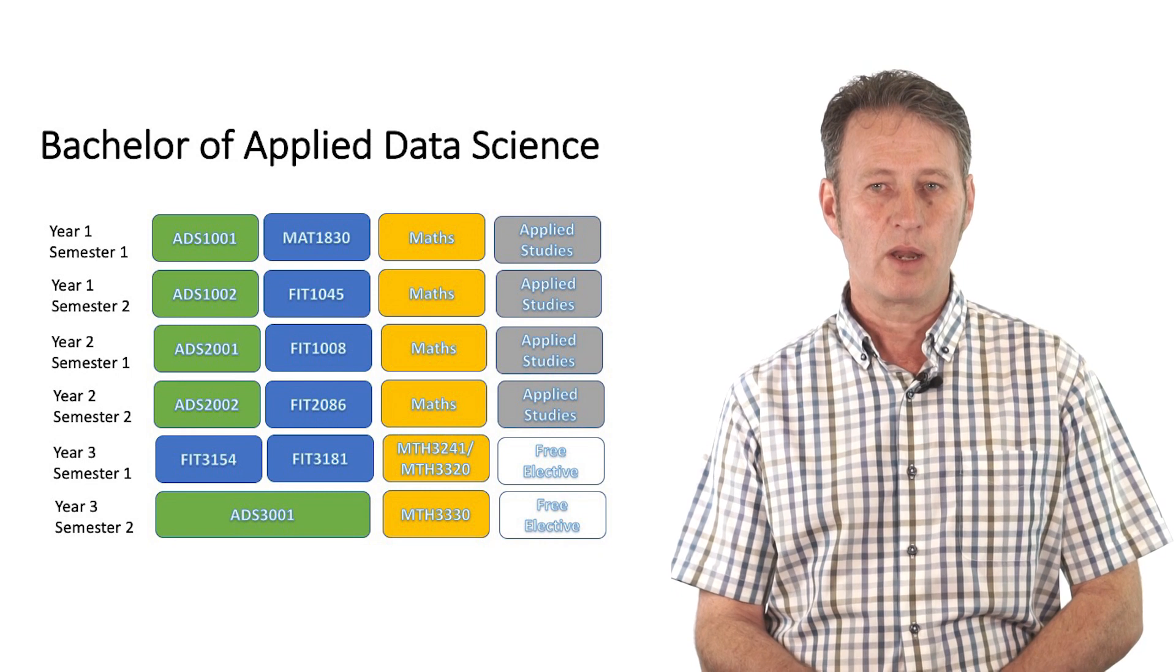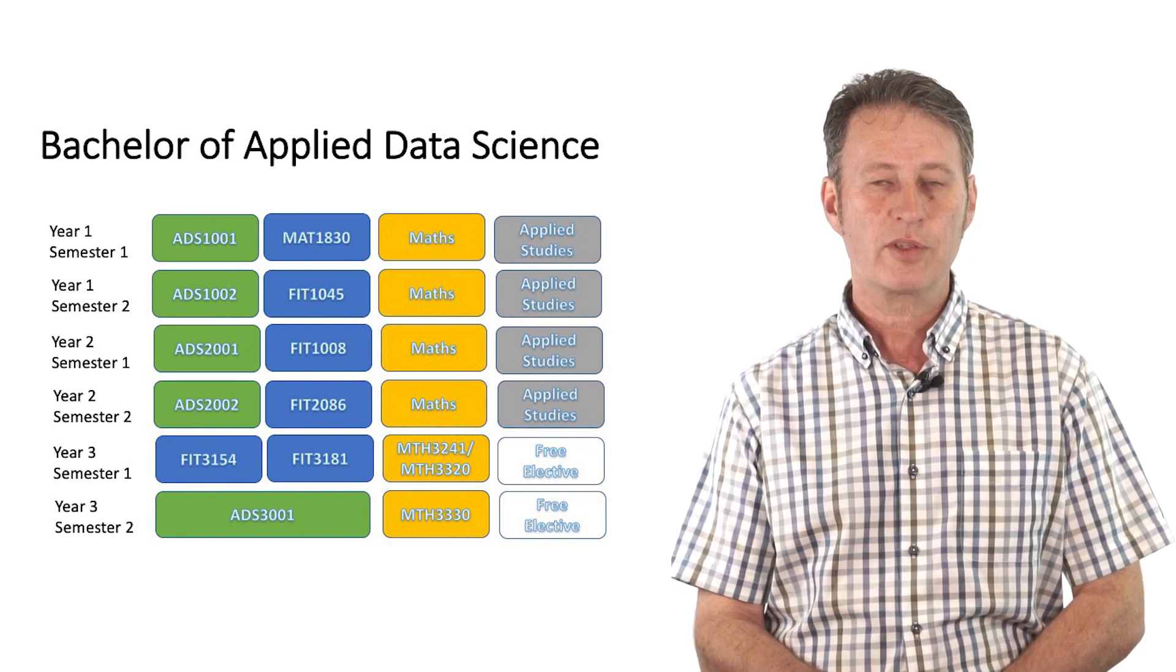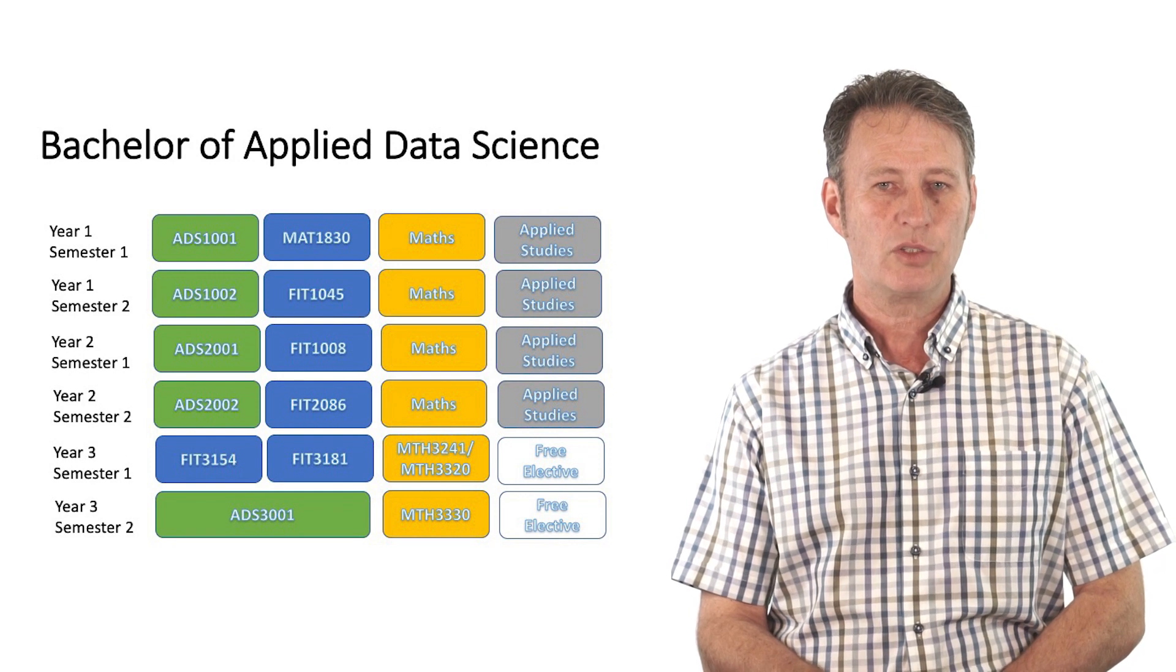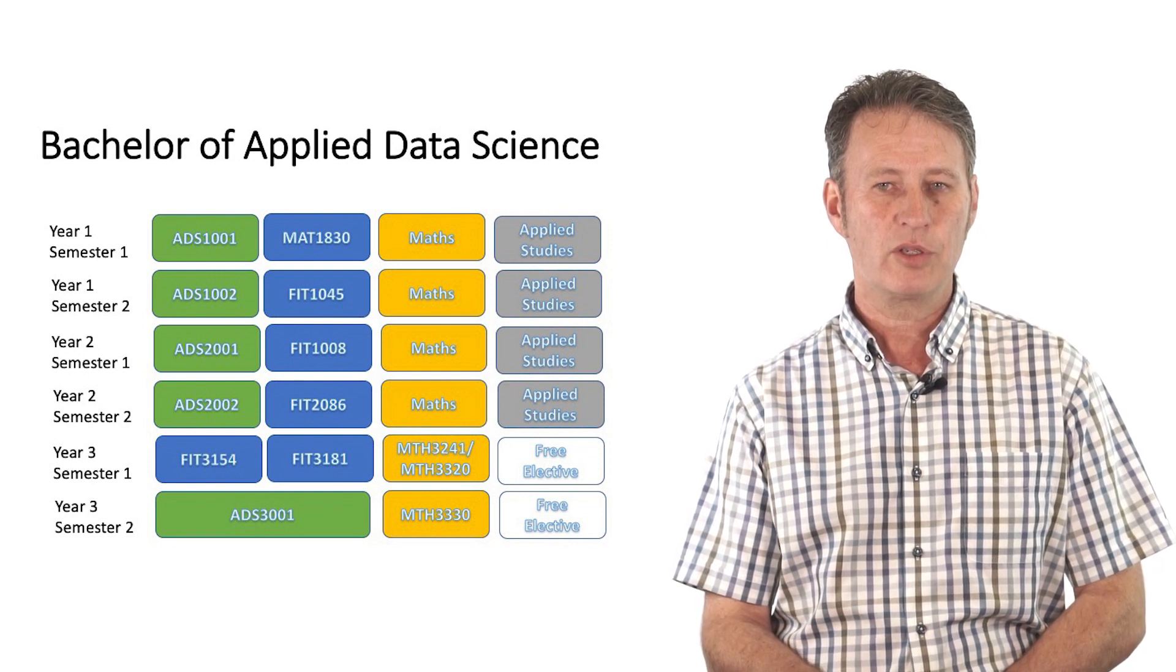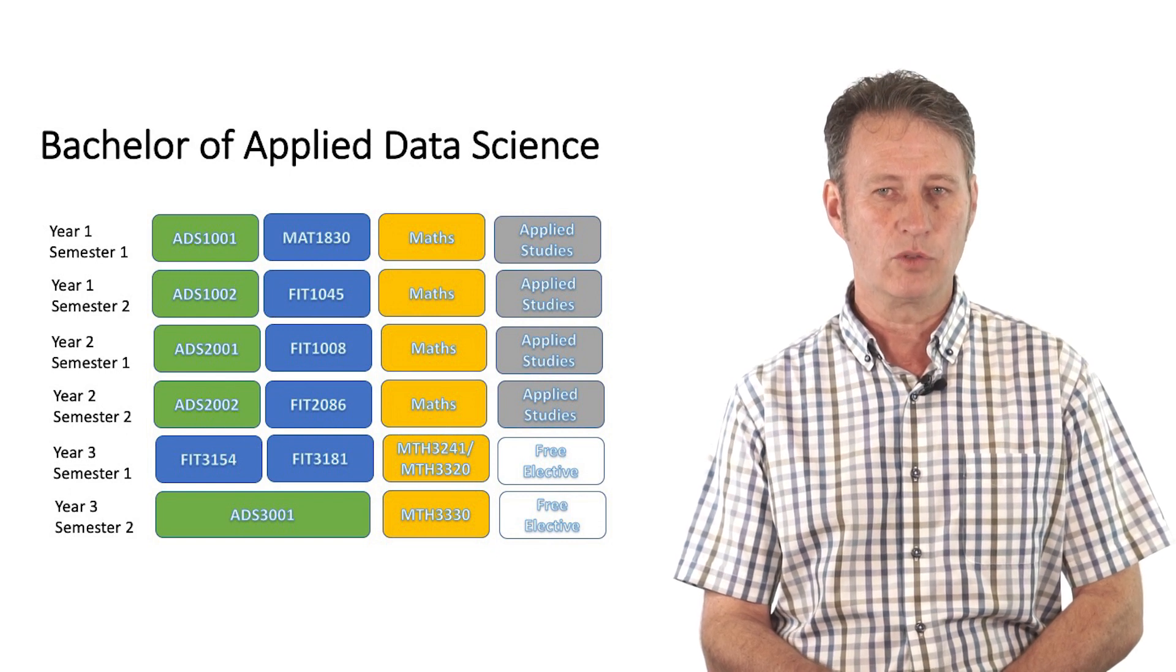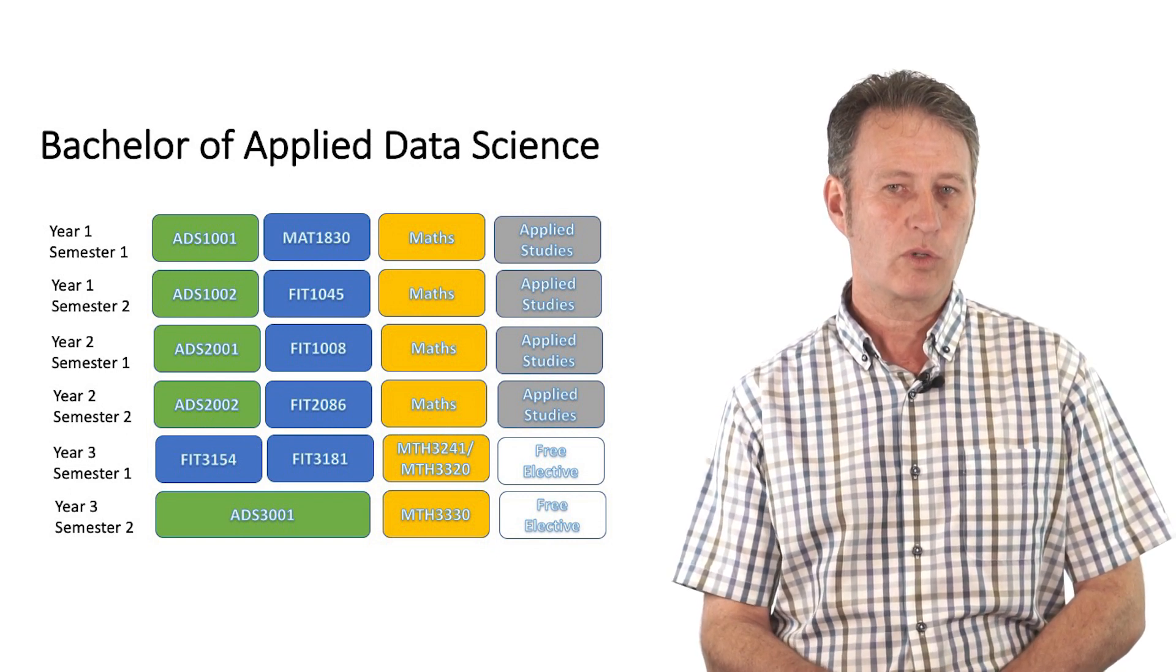The units which are shown in yellow are those which are taught by the School of Mathematics. For these units you will need to make a choice of what units you are going to take in first year and also what sequence you are going to take at higher levels. I'll go into that in more detail later.